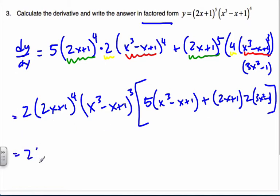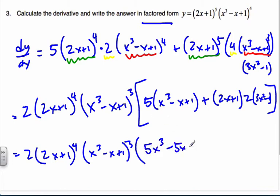Keep simplifying: 2(2x + 1)^4(x³ - x + 1)^3. If I simplify this all together, I have 5x³ - 5x + 5 plus 2(2x + 1)(3x² - 1). Let me back up here. When I multiply this, I get 12x³, I get 6x², I get 4x minus 4x, and then the final one is 2 times 1 times -1, which will be -2.